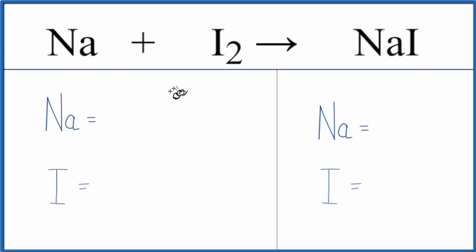First thing we need to do to balance an equation, count the atoms up on each side. One sodium, two iodine atoms.